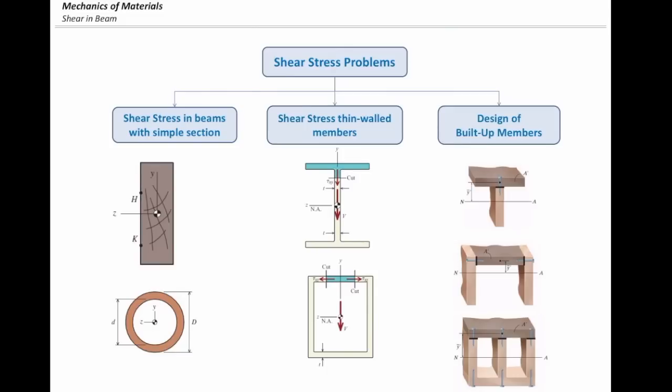We will also talk about built-up members, and for this kind of problems, we use another equation that we developed on the first lecture of shear stress problems. That is: delta F equals delta M times Q over I. Delta F is the unbalanced force. Or sometimes we use the equivalent version: VQ over I times delta X. These two equations are equivalent to each other.